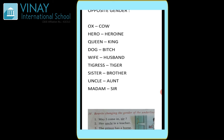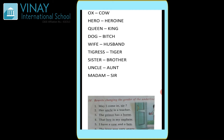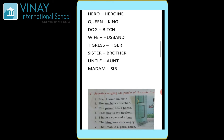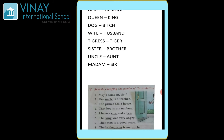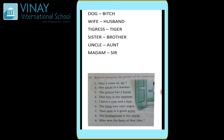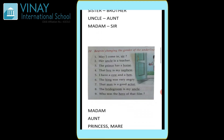Dog — jaise meinne bola kutta — uska humme feminine form kya batayenge — bitch. Wife is a feminine form, patni — uska pati that is husband, masculine form. Tigress and tiger — bag to feminine form mein diya gaya hai, humme uska answer masculine form mein dena hai — that is tiger. Sister — behen, that is feminine form, uska masculine form ho jaega bhai, brother. Uncle — then aunt. Madam ka ho jaega sir — aap school mein bolte ho na madam and sir — so madam is feminine form but uska answer humme masculine form mein dena hai, that is sir.